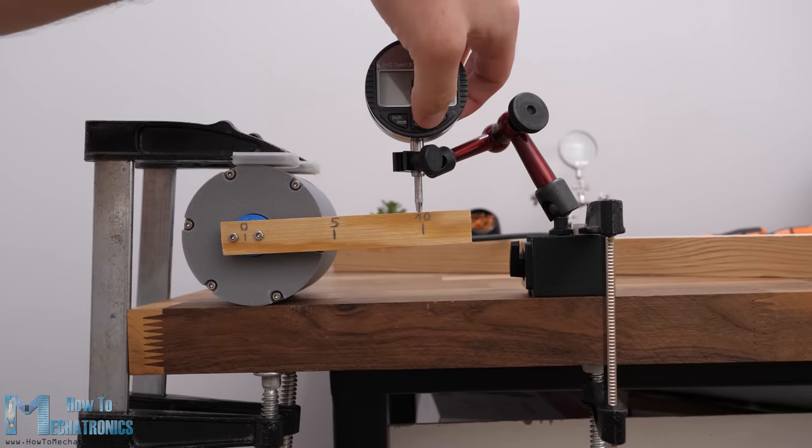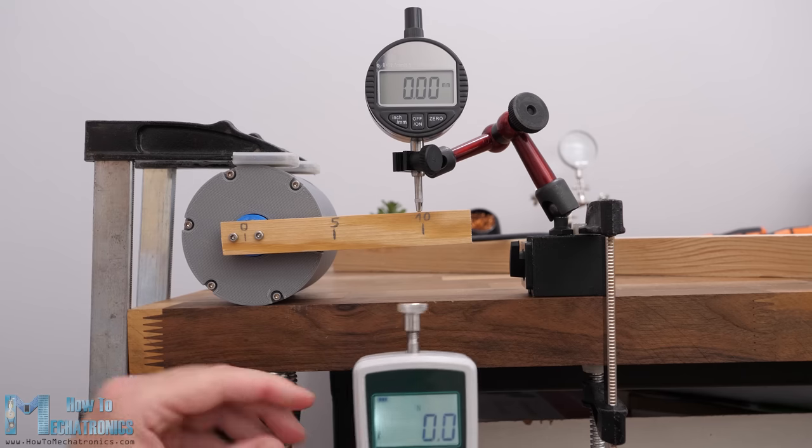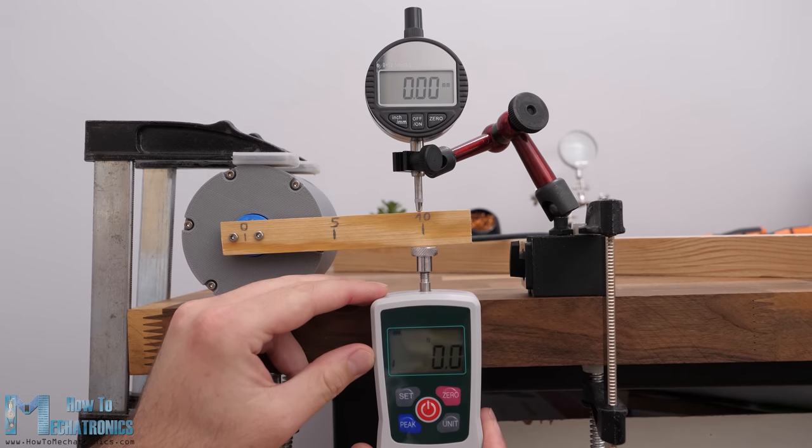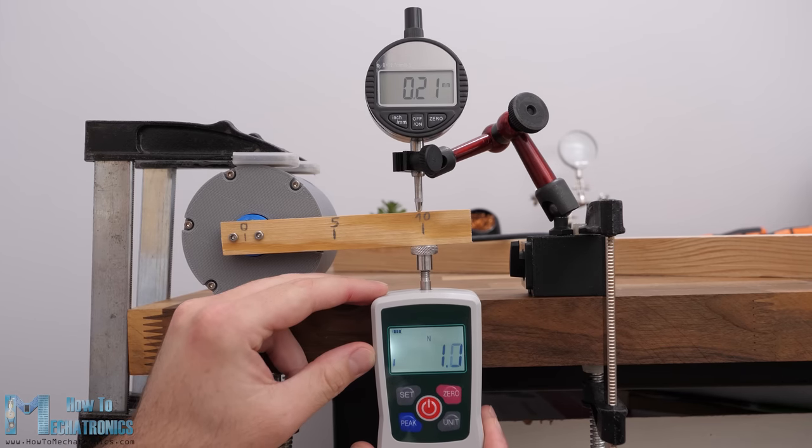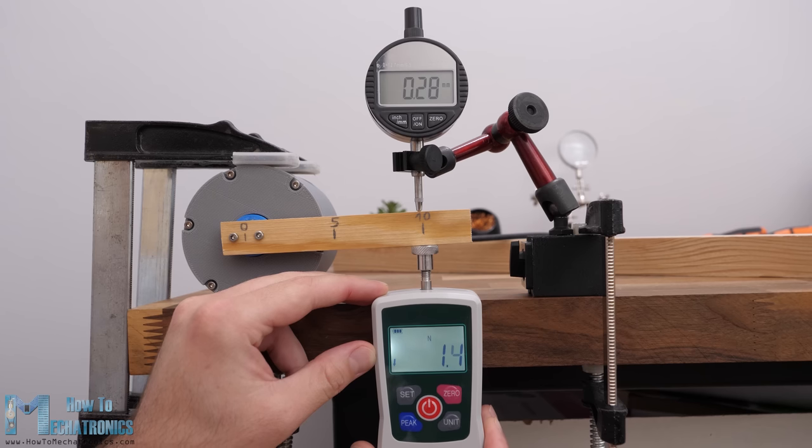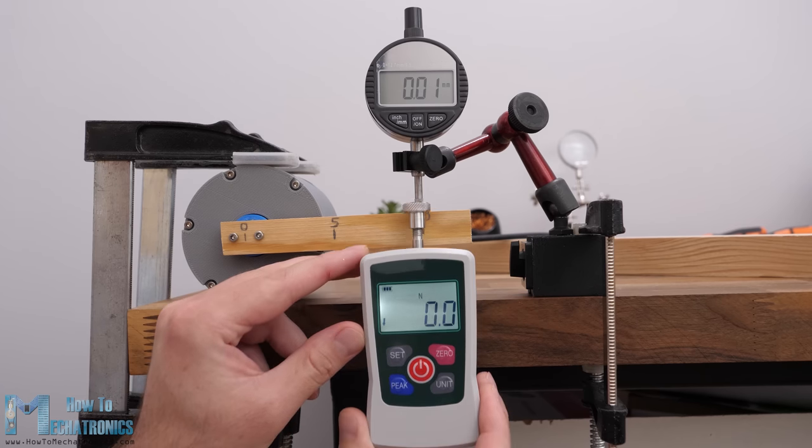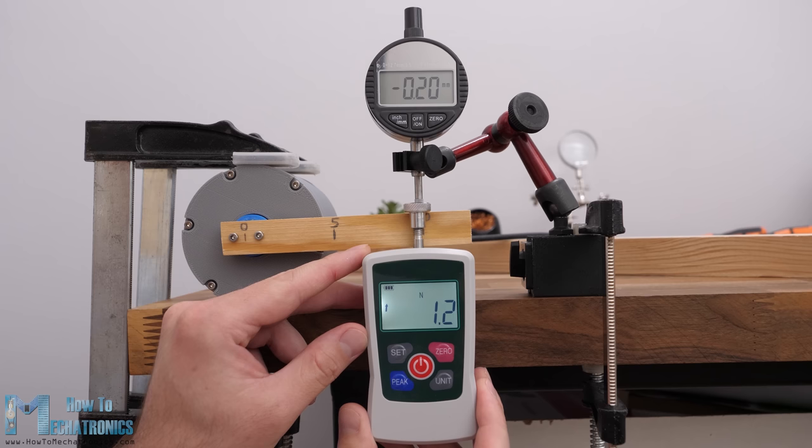That's very good result but to express the backlash in its typical unit, arc minutes, we need to do the following. We should measure the displacement in both directions while applying a load of around 1 to 2% of the nominal torque capability of the gearbox.